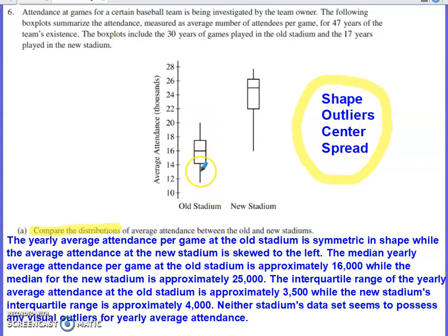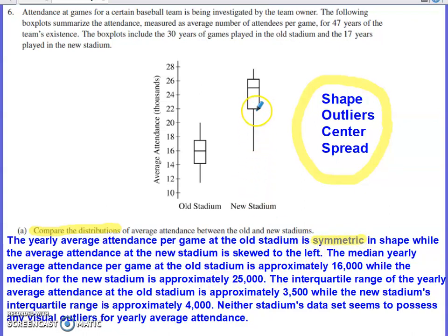For the old stadium box plot, these two tails have roughly the same length and the two boxes have roughly the same length. There's not really a big width discrepancy between the width of the boxes and the width of the tails. So for the old stadium, we have a roughly symmetric shape. For the new stadium, we've got a tail that's pulling downward. If this was plotted horizontally, the tail would be extending to the left on the number line, so we have a skew to the left for the new stadium's shape.